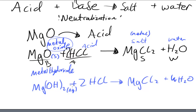Bases are substances which can accept protons. Alkalis are a special type of base — what makes them different is that alkalis dissolve in water and are therefore usually aqueous when they react with an acid. Magnesium oxide does not dissolve in water; it reacts as a solid, so it is a base but not an alkali. Mg(OH)₂, being aqueous, is an alkali.